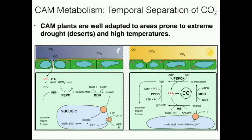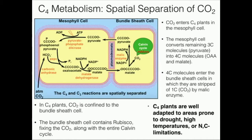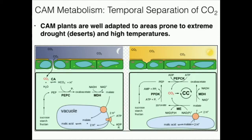During the day, the stomata close — CO2 can't get in. The malate will now be released from the vacuole and immediately react with malic enzyme, which decarboxylates malate to pyruvate, releasing carbon dioxide. We still get the pyruvate, we perform an oxidation so we get an NADPH, and we also get the CO2 — shown in red — which then goes into the Calvin cycle where it is fixed by Rubisco.